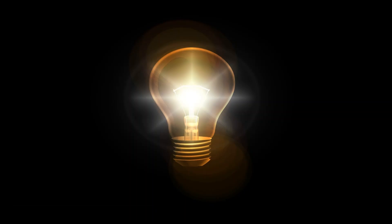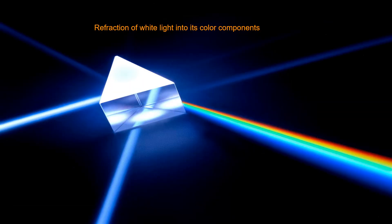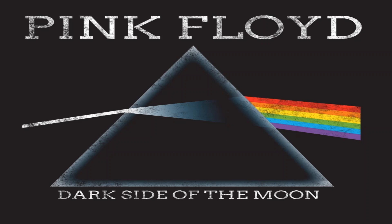Imagine we have a light bulb glowing white hot. The light from that light bulb passes through a prism and it gets refracted into the color components of white light. White light is actually the combination of all the visible wavelengths. Those visible wavelengths, according to Pink Floyd, are red, orange, yellow, green, blue — and actually violet and indigo too. They did a pretty good job getting that right.